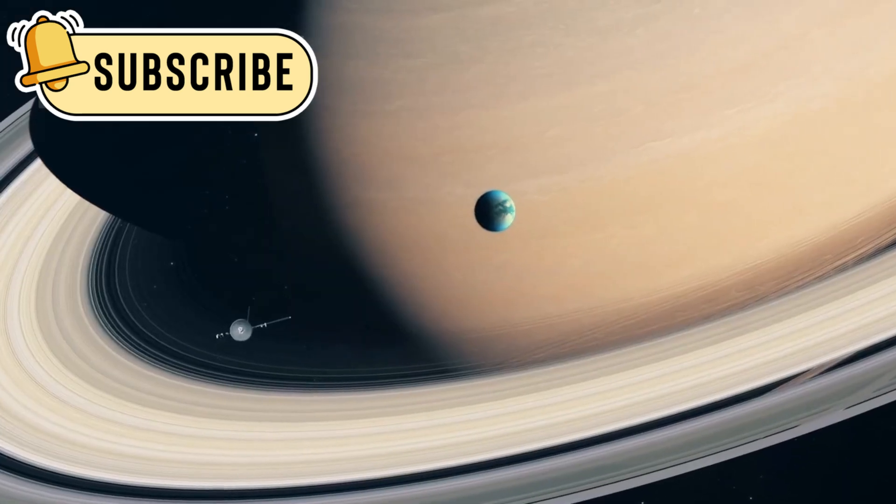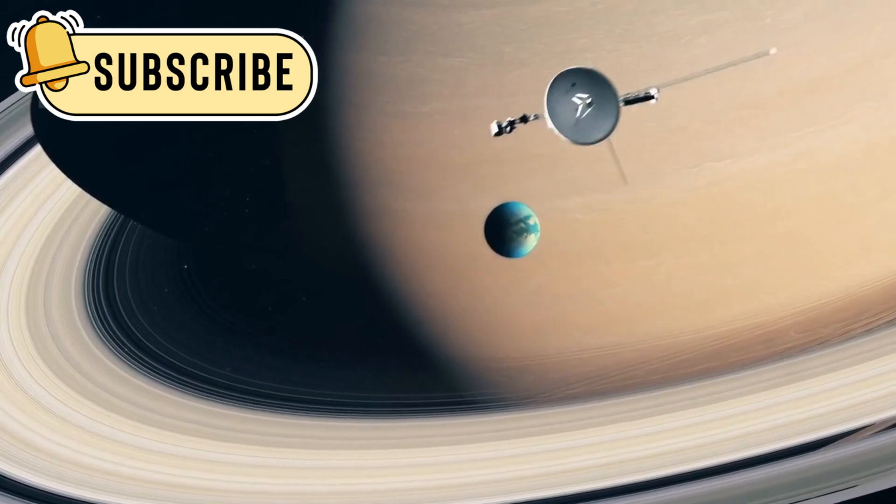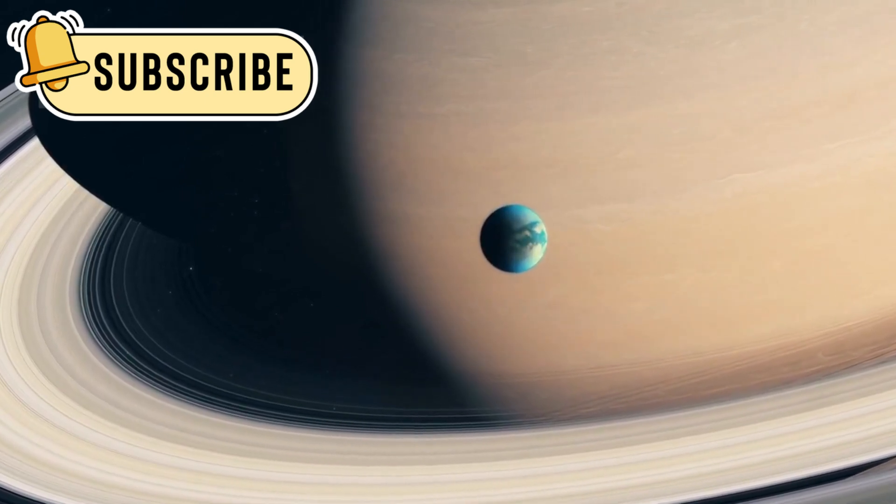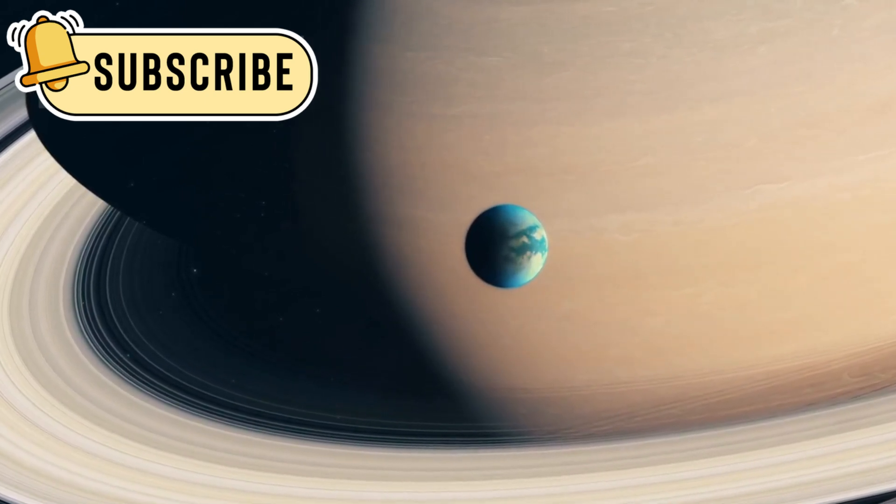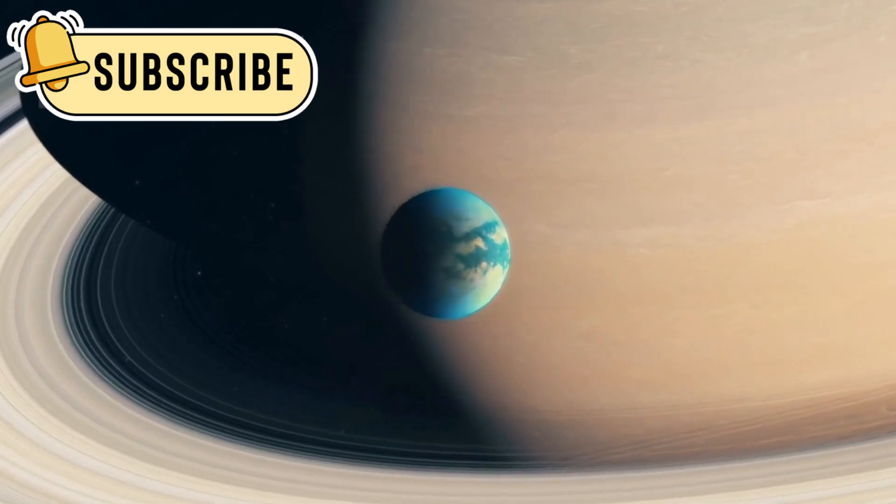Voyager 2, in particular, made history by being the first spacecraft to visit Uranus in 1986 and Neptune in 1989, sending back astonishing data from these previously unexplored regions, over 14 billion kilometers from Earth.